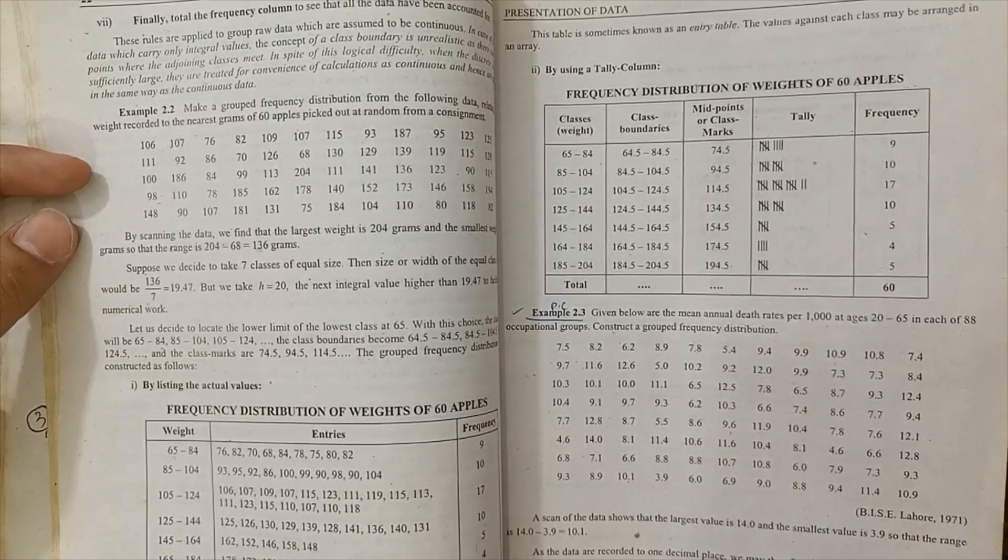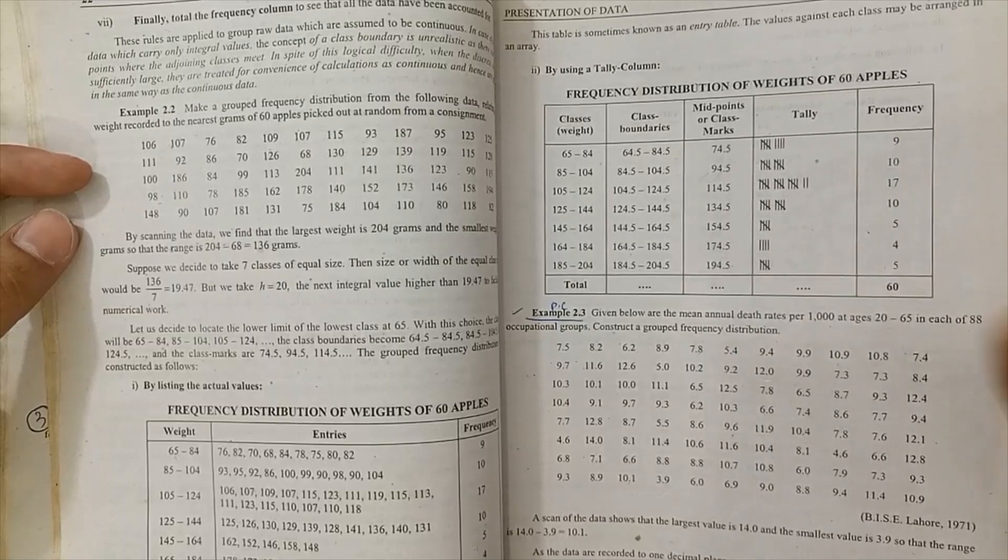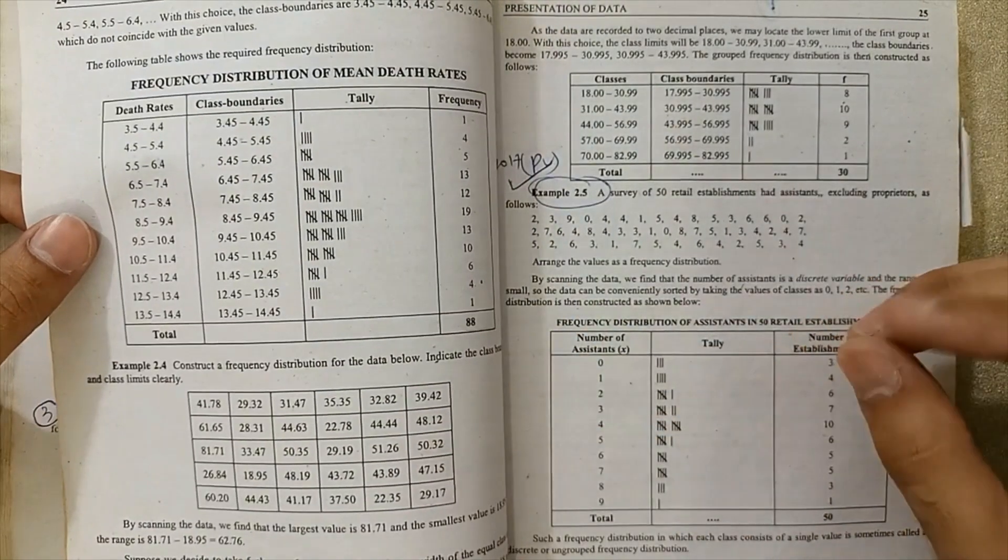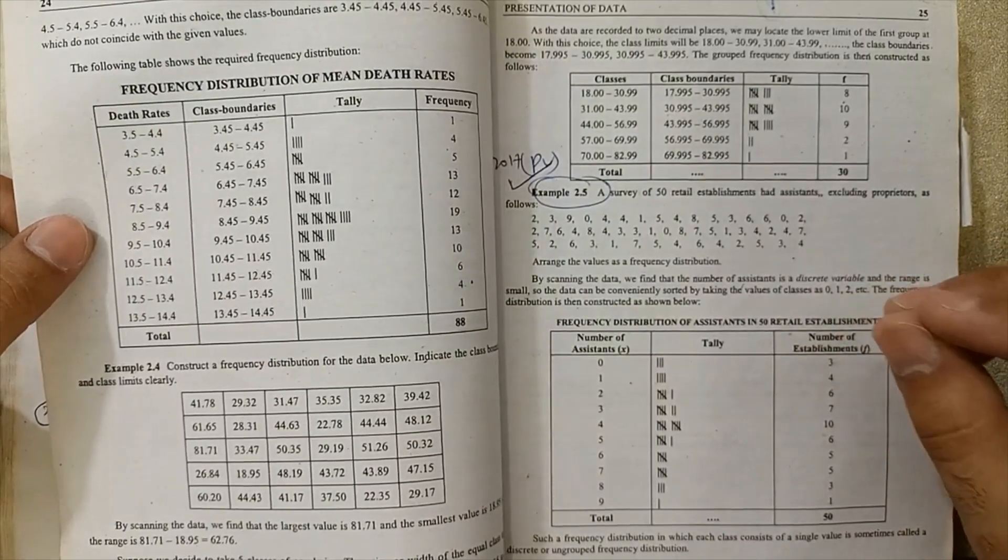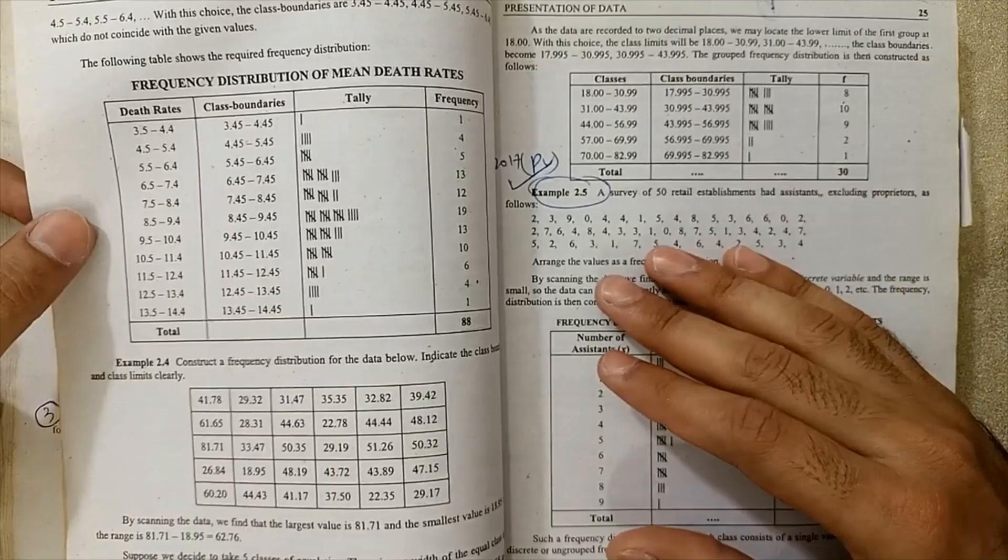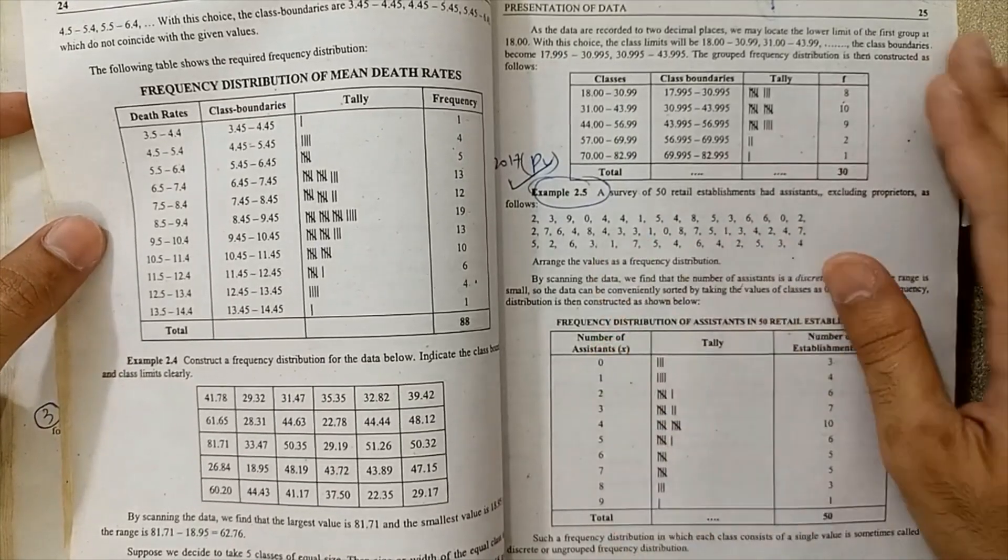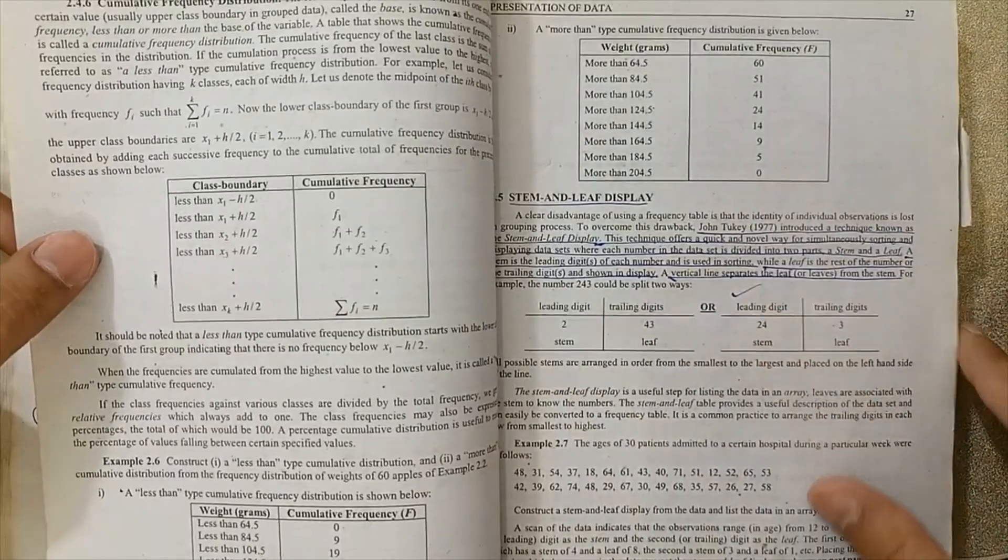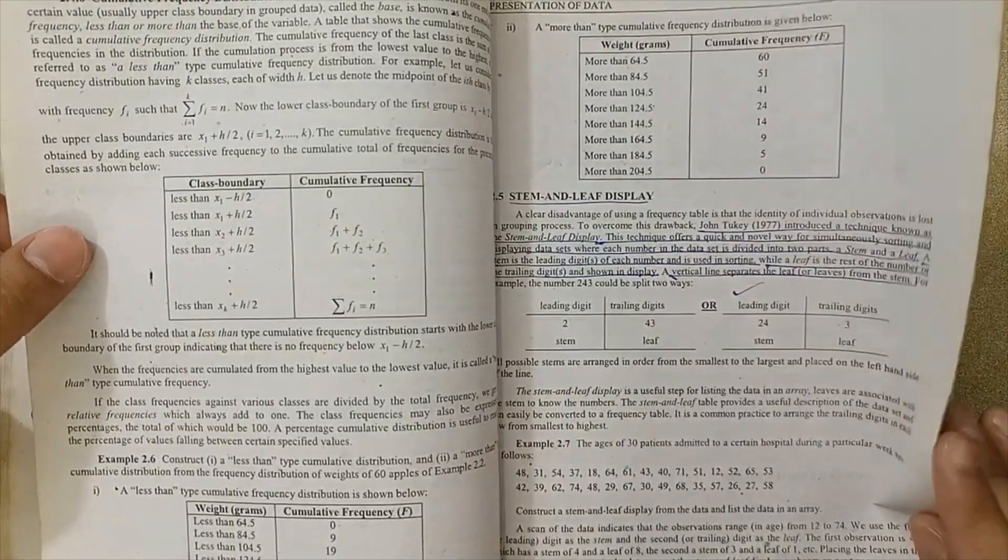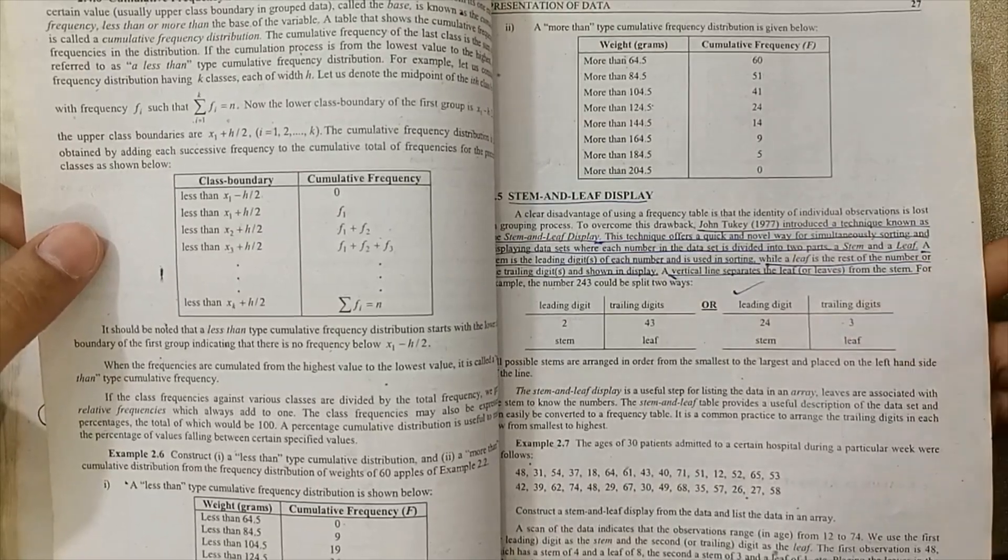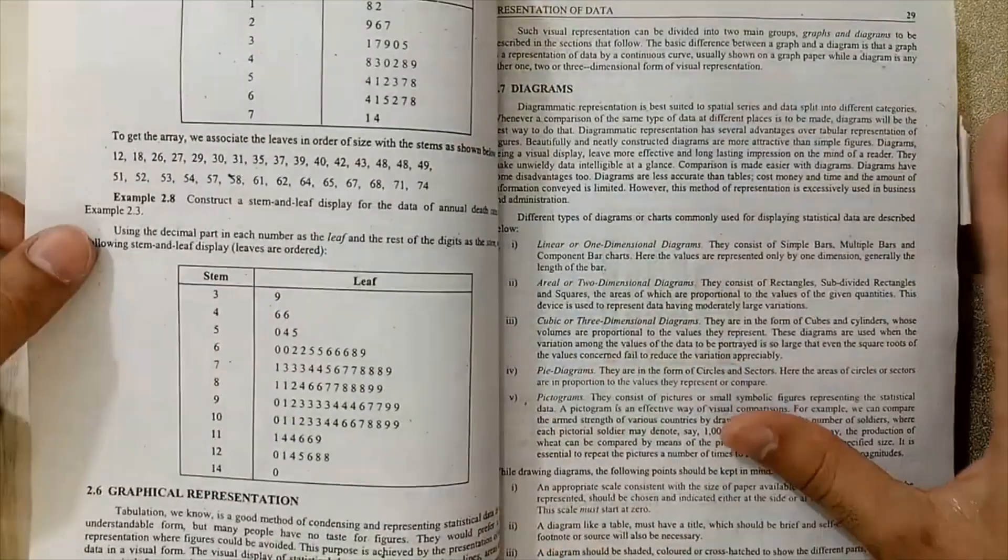...class interval, midpoint, class width. This question is very important for you, and you have to just follow the method I have already discussed in this lecture. The next example, example 2.5, is very important for you for exams. And next step is here: stem and leaf display is very important. What is the stem and leaf display? This problem is very important.